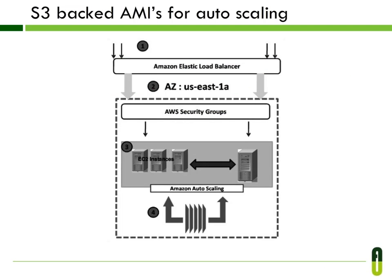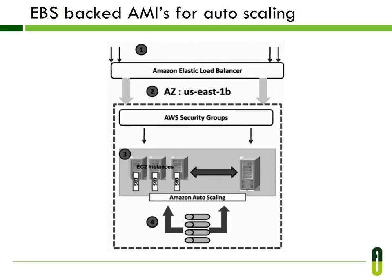This is the flow for S3-backed AMIs for autoscaling. Step 1: web requests are sent to the Amazon ELB. Step 2: AWS ELB transfers the requests to Amazon EC2 instances launched in the US East 1 Availability Zone. Step 3: Amazon EC2 instances are configured to be part of the AWS Autoscale group. Step 4: AWS Autoscaling launches the new AWS EC2 instances from the S3-backed AMIs. For EBS-backed AMIs: web requests are sent to Amazon ELB, which transfers requests to EC2 instances in US East 1B Availability Zone. Those EC2 instances are configured to be part of the AWS Autoscale group.